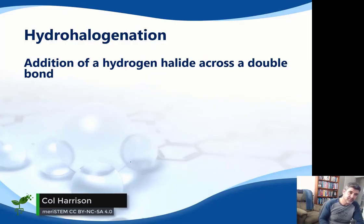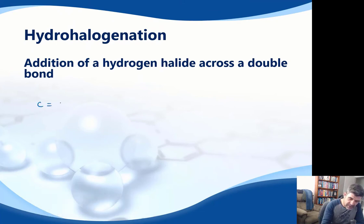What about hydrohalogenation? This is the addition of a hydrogen halide across a double bond. So if we continue our sequence, this time, instead of adding hydrogen or a halogen, we're going to add one of each. Let's call it hydrogen bromide.